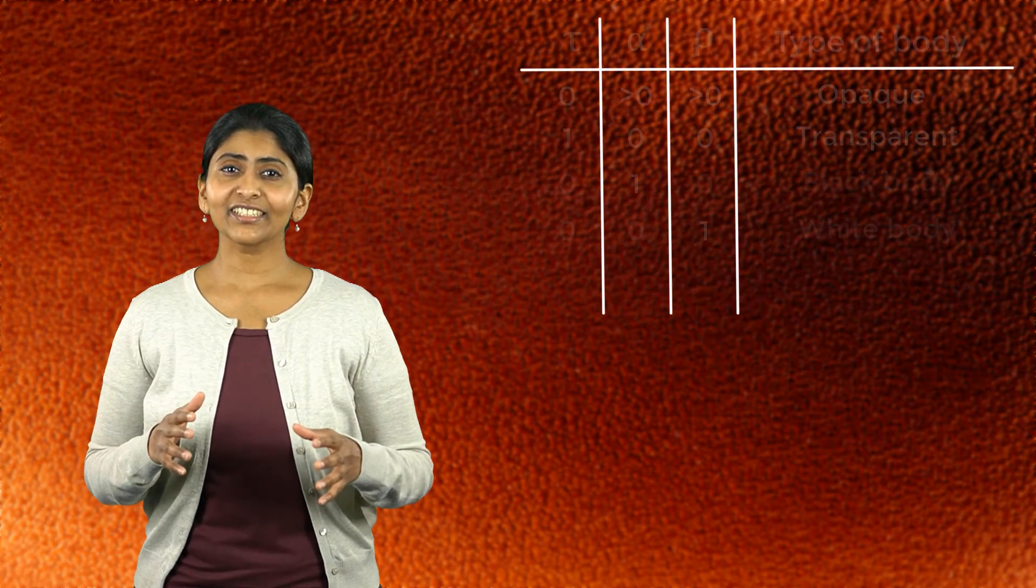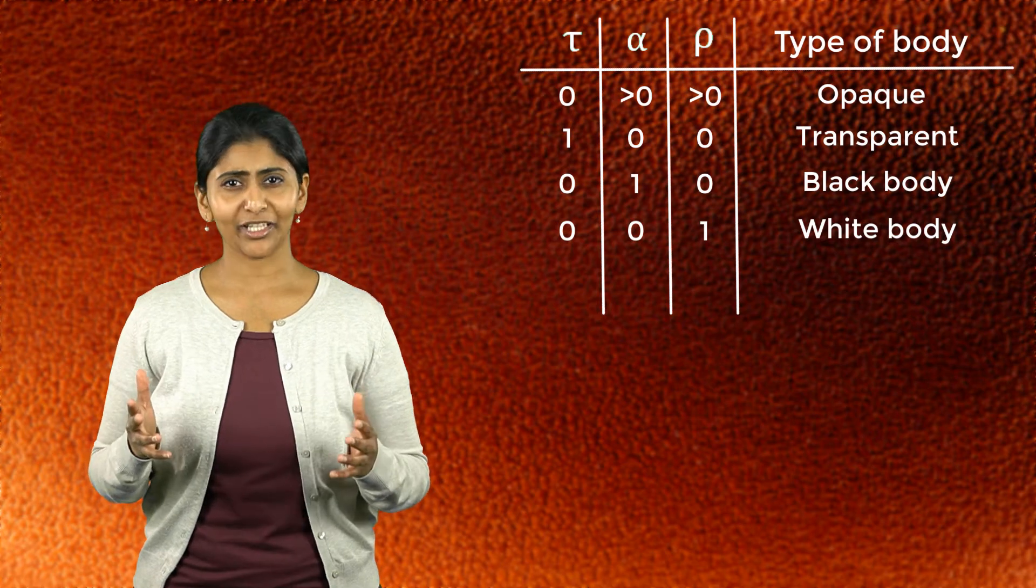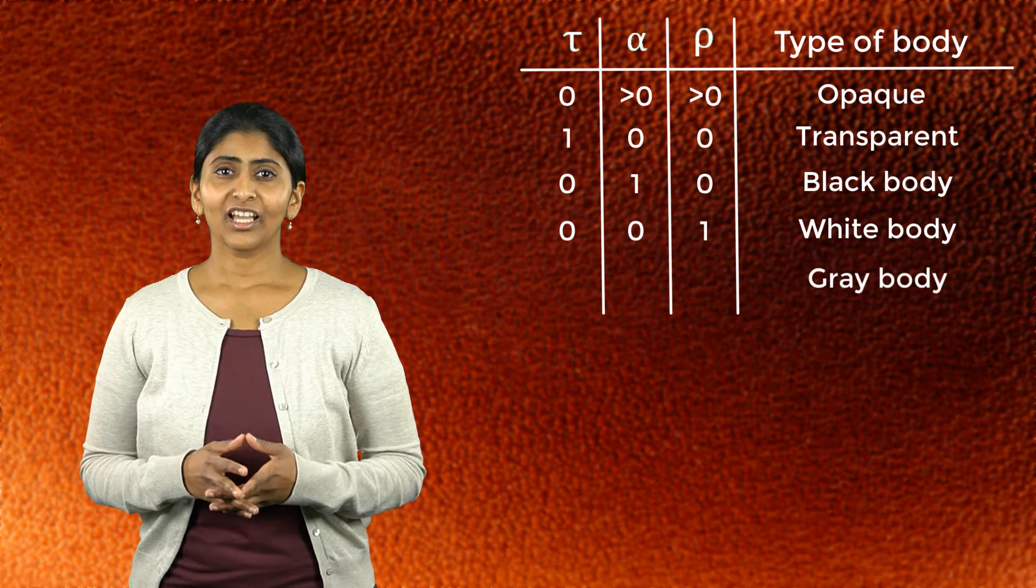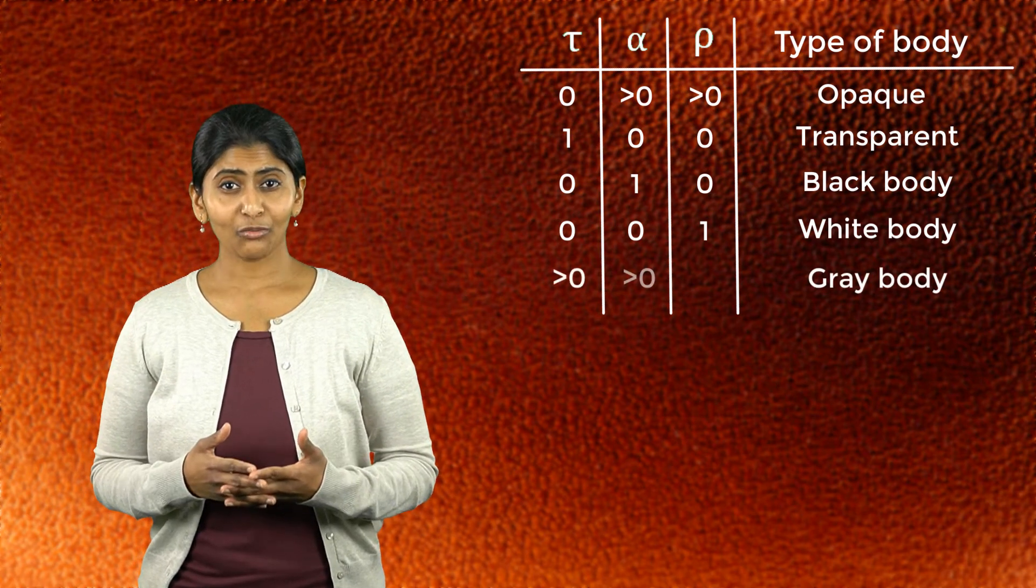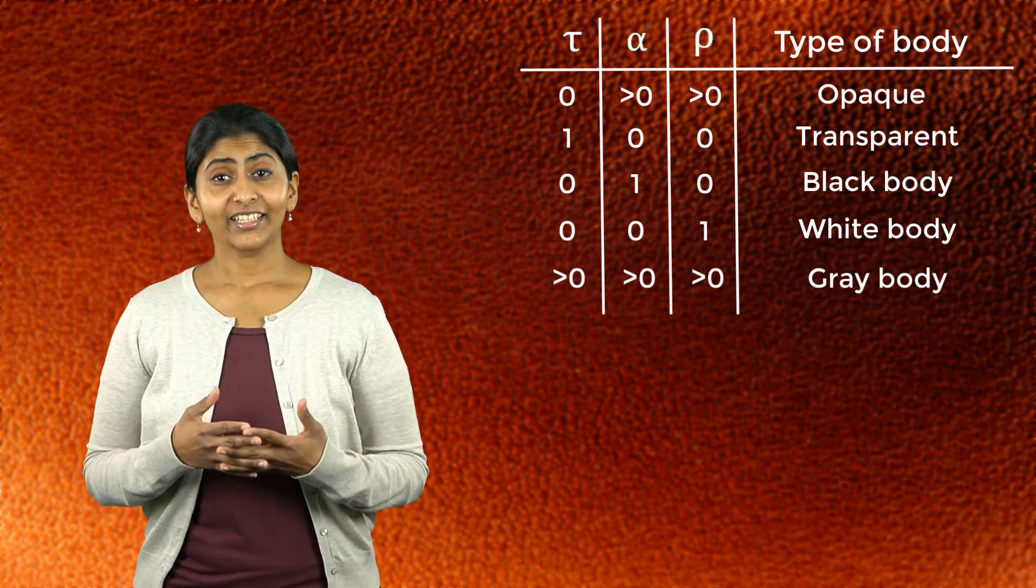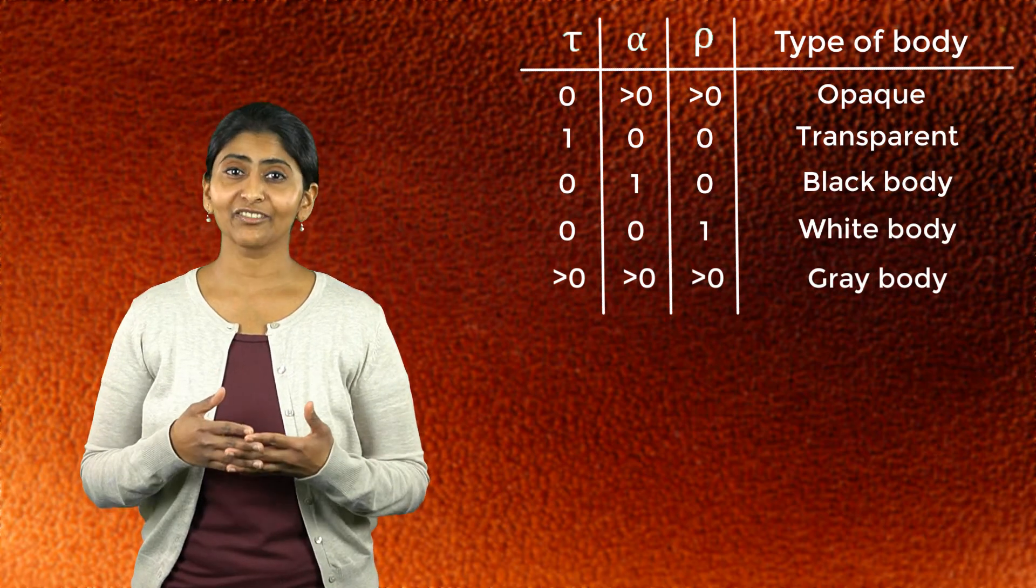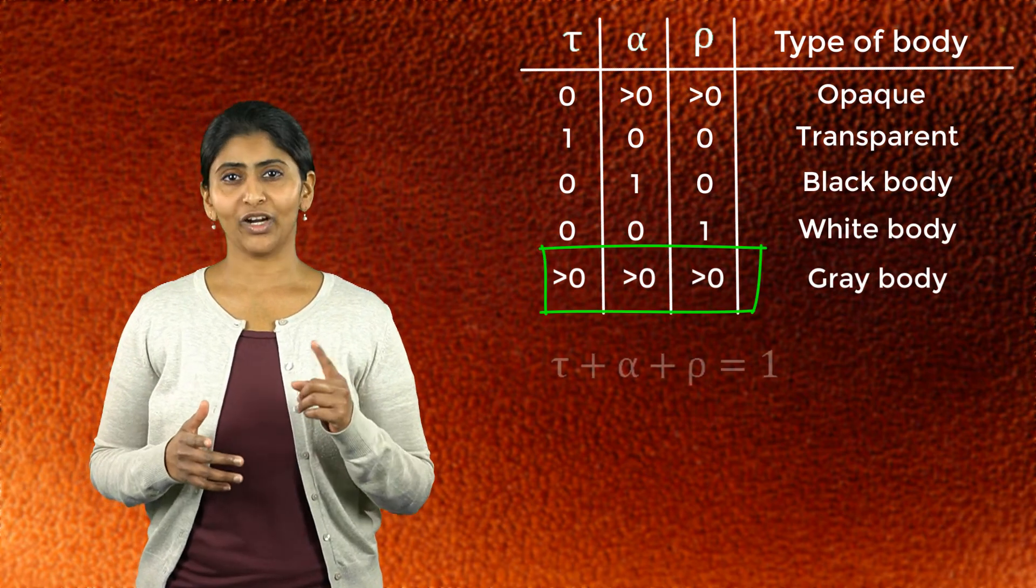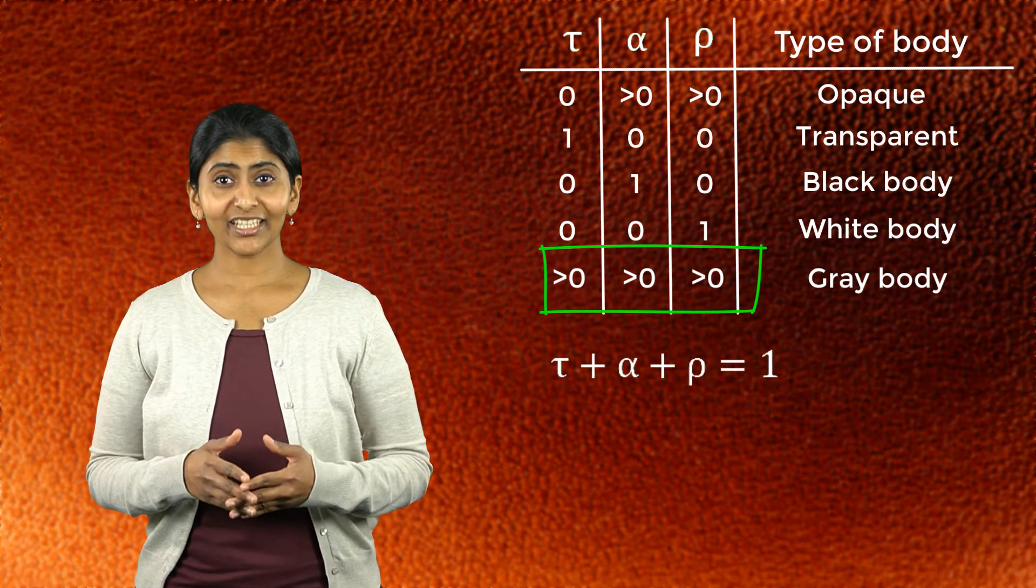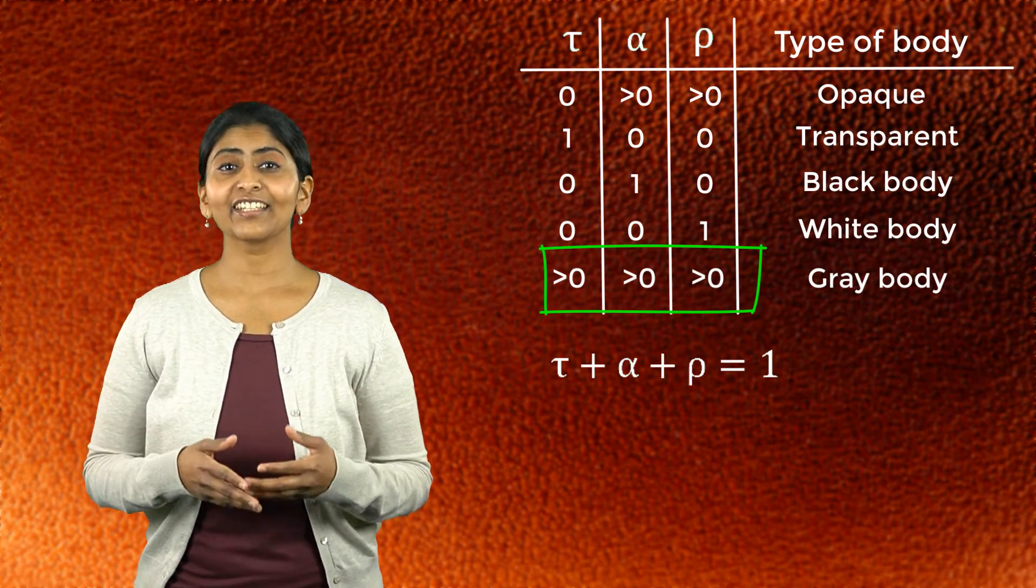Now, real surfaces in nature fall somewhere in between black and white bodies. Such surfaces are called grey bodies. Grey bodies may transmit, absorb and reflect the radiation incident on them. That is, they may have non-zero transmissivity, absorptivity and reflectivity, which together add up to 1.